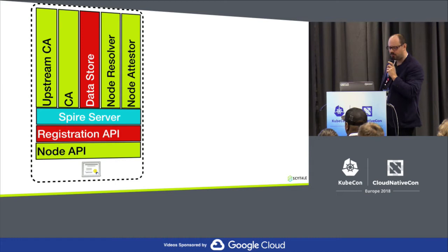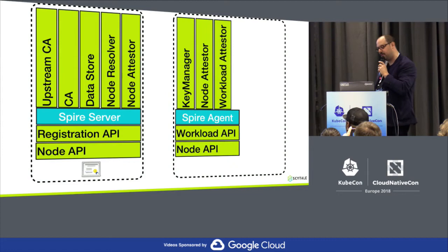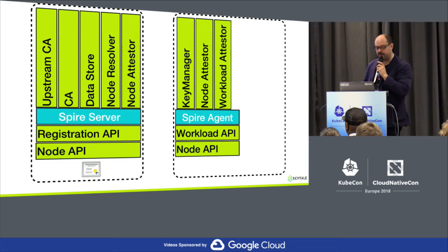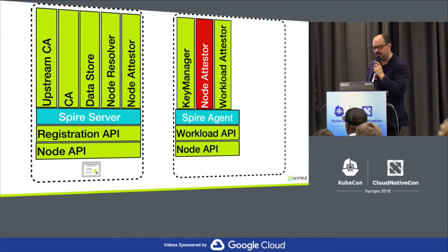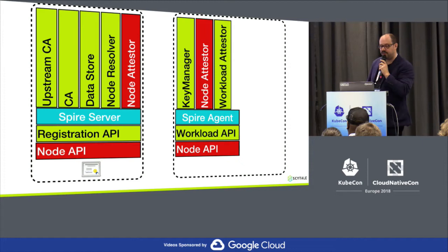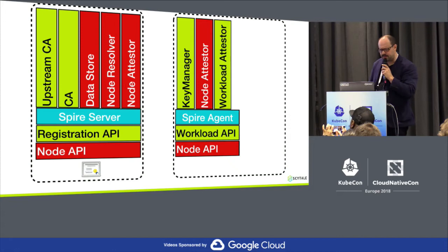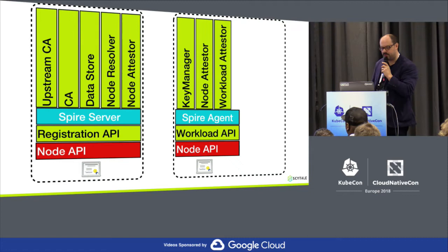For node attestation, the node comes up online. One thing to note is that we have pre-seeded that node with the bundle of trust from the SPIRE server. The node attester runs, checks whatever metadata is on that node, generates a CSR request, and the node API is called. The node attester on the server side verifies the signing data is correct, the node resolver is called for additional data, we look it up in the data store, and sign the CSR. We then deliver what we call the base SVID to the calling node — at this point we just have an identity for the node, and workloads on that node will have a different identity.